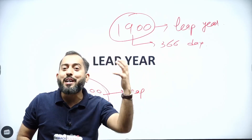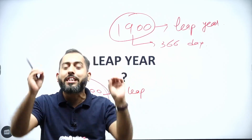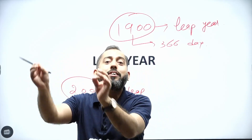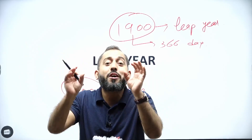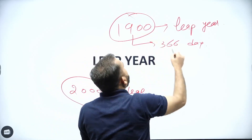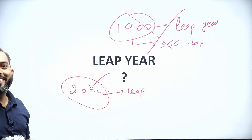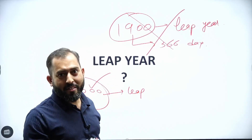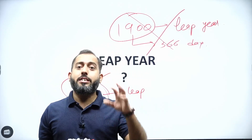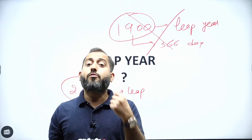Let me tell you one thing — if you have only that definition in your head, then it is half correct. It is not properly correct. 1900 was not a leap year, but 2000 was. How can that be?